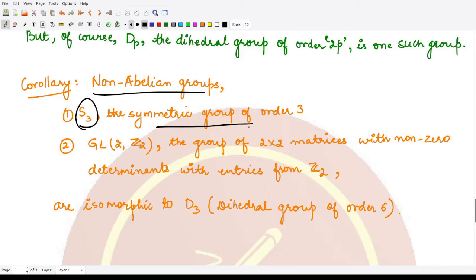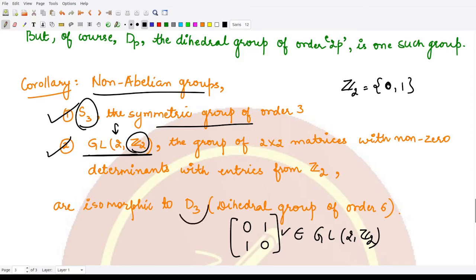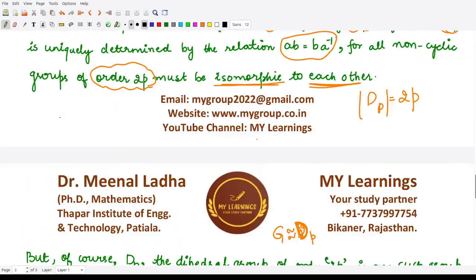As a corollary, for non-abelian groups: the symmetric group S₃ of order 6 and the general linear group GL(2, Z₂) — consisting of all 2×2 invertible matrices with entries from Z₂ = {0, 1} — both have order 6. Both of these groups are isomorphic to the dihedral group D₃ of order 6.